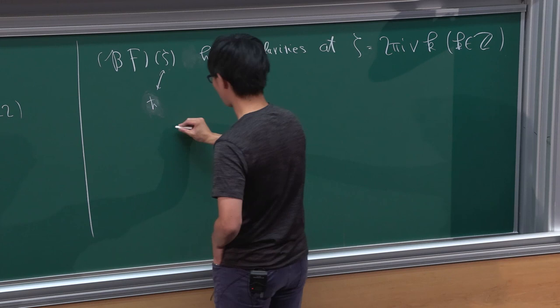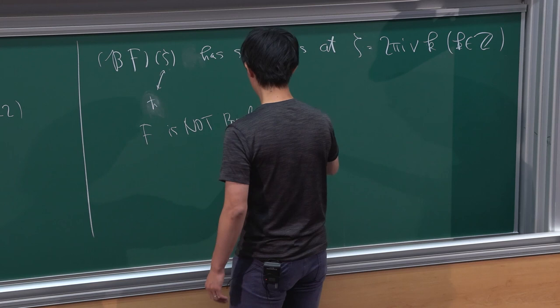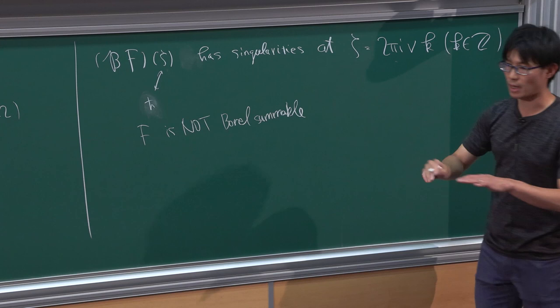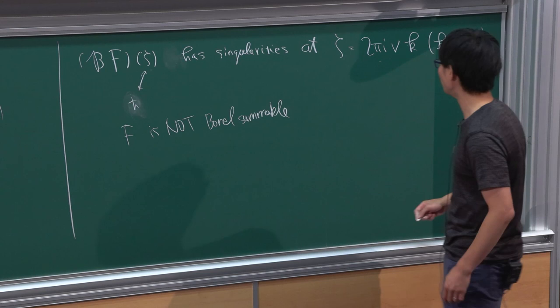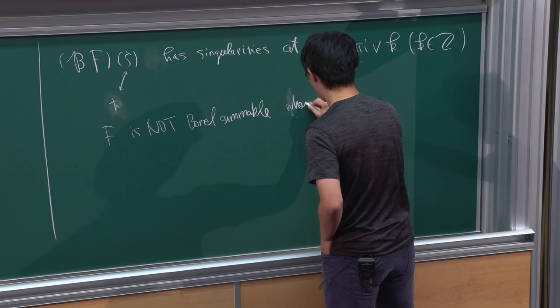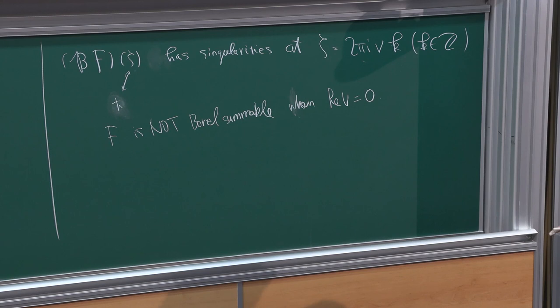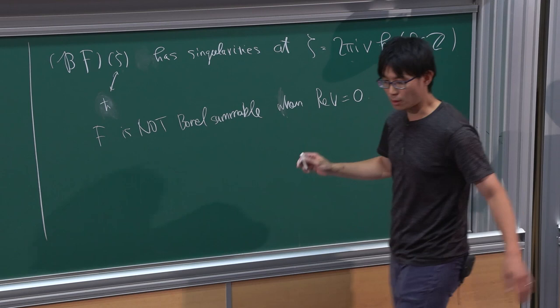This means that F is not Borel-summable when these Borel singularities lie on the positive real axis, which is where you take the Laplace transform to define the Borel sum. The condition on nu is that the real part of nu equals 0. When this is satisfied, you have a bunch of singularities on the positive real axis and you can discuss Stokes phenomena.